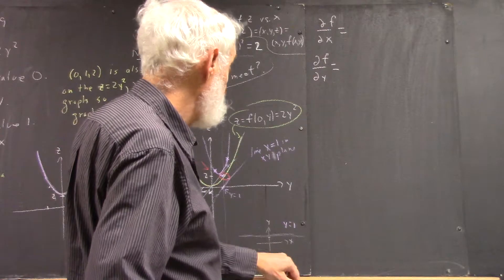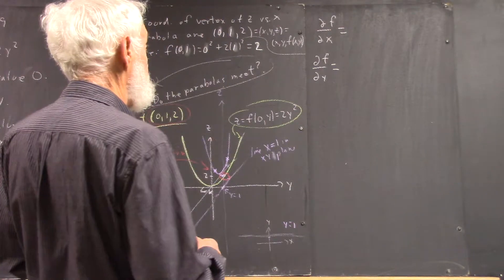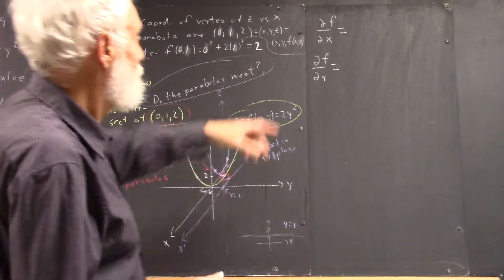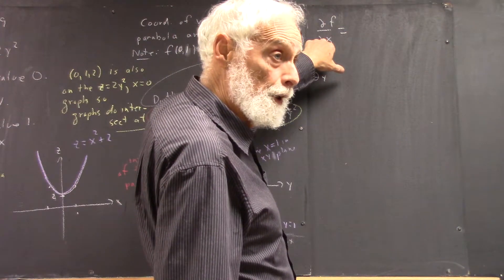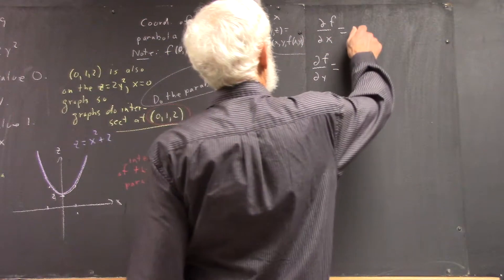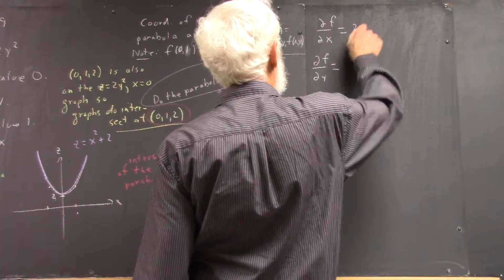So, the partial derivatives are easy to calculate. Remember, we hold Y constant. To do the partial of F with respect to X, we hold Y constant and take the derivative with respect to X. Then we get just 2X because if Y is constant, remember that...